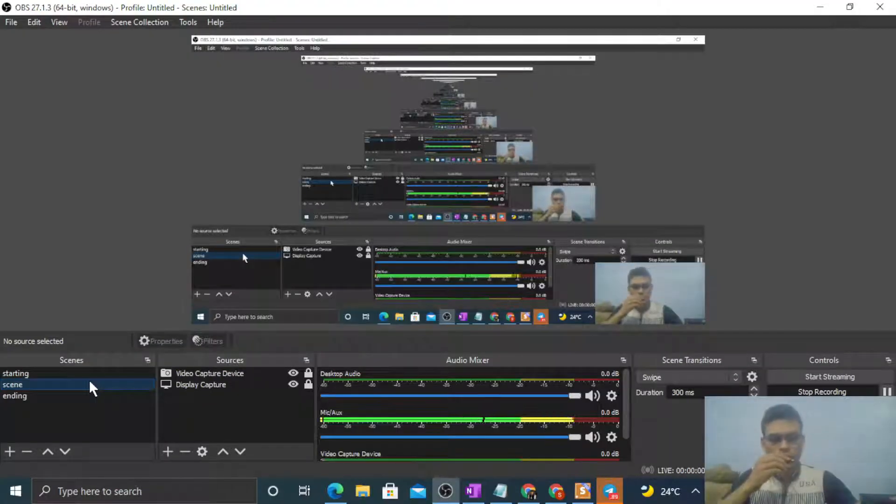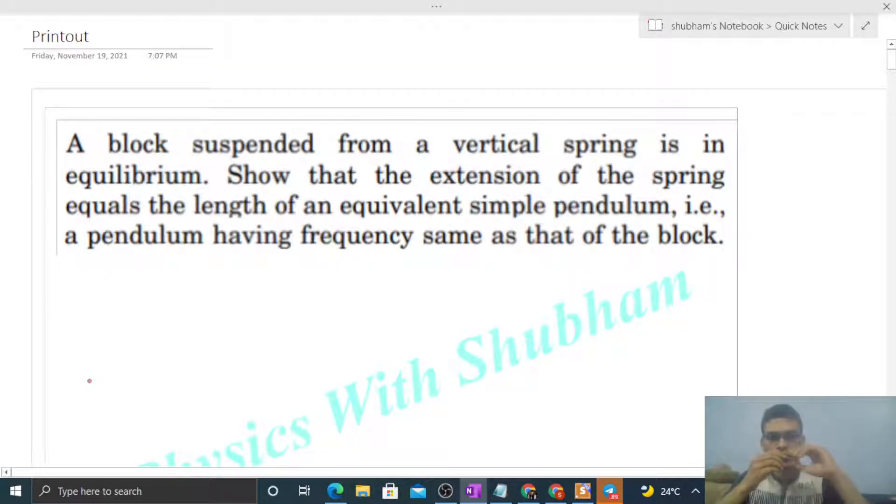Okay, hi everyone. So today let's discuss one interesting problem. It says a block suspended from a vertical spring is in equilibrium. Show that the extension of the spring equals the length of an equivalent simple pendulum, i.e., a pendulum having frequency same as that of the block.